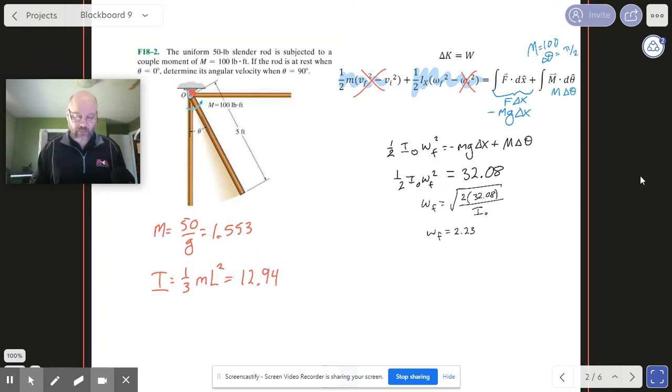All right, now some of you might have been wondering, is it possible—we got rid of the mv squared term there—would it have been possible to have done it this way? And the answer is yes, okay. I'm going to show you, I think in the next example, I got one coming up where we'll do that and you can see how that's going to work. It just makes it a little bit more complicated.